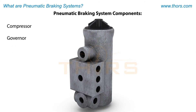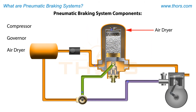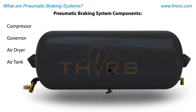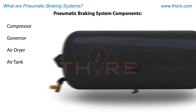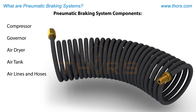An air dryer, which rids the entire system of moisture and contaminants. An air tank, which stores compressed air for future braking applications. Air lines and hoses, which transport the compressed air through the braking system.